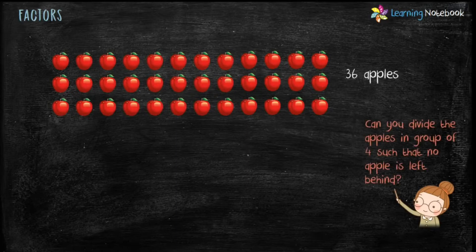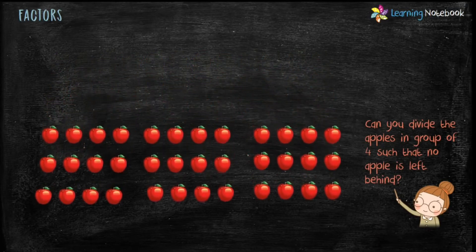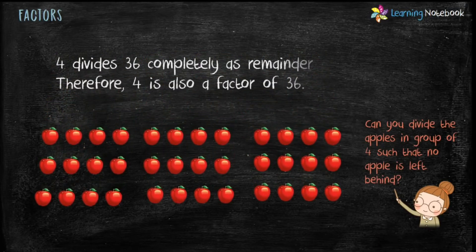Now can we divide these 36 apples in a group of 4 such that no apple is left behind? Let's make groups of 4 apples, and we find that there is no apple left behind. This means 4 divides 36 completely as remainder is 0, therefore 4 is also a factor of 36.